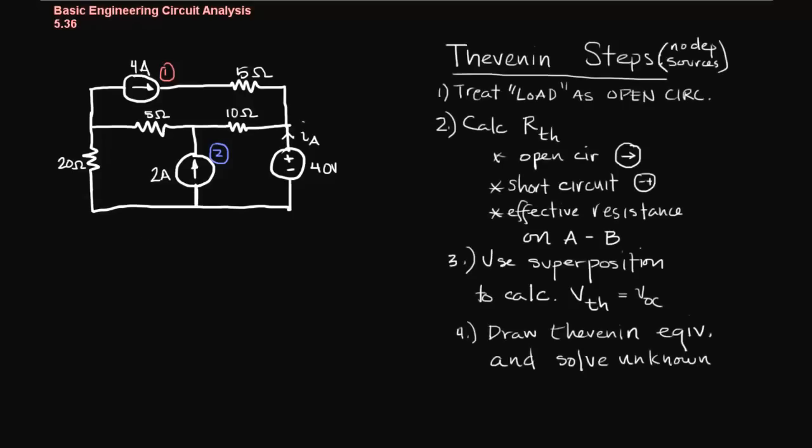Let's take a look at one more example of a circuit problem involving Thevenin's theorem in which we have no dependent sources. We'll review our procedure here. We're going to treat the load as open, calculate our R Thevenin using these rules, then we'll use superposition and solve for the Thevenin voltage and then solve for the unknown.